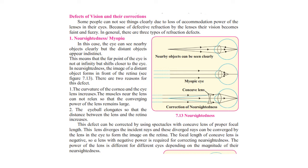In general there are three types of defects of the eye we will be studying. The first one is called nearsightedness or myopia. In this case we can see nearby objects clearly but cannot see objects far away. In myopia, the image of a distant object forms in front of the retina.